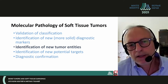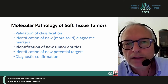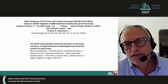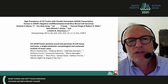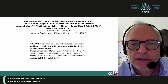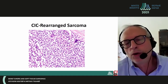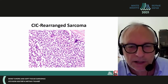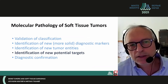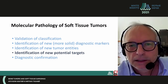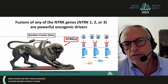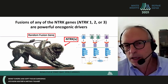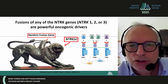Molecular pathology is also important for identification of new tumor entities. The fusion involving CIC has been discovered in CIC-rearranged small blue round cell sarcoma, and now we know that there is a new entity — CIC-rearranged sarcoma — which is different from Ewing sarcoma. Moreover, molecular pathology is also important for identification of new potential targets. The fusion of any one of the NTRK genes — NTRK1, 2, or 3 — are powerful oncogenic drivers, and there are drugs specific for this kind of rearranged tumor.